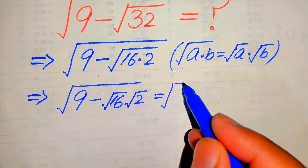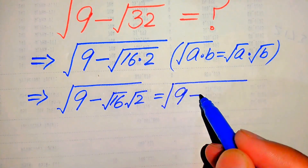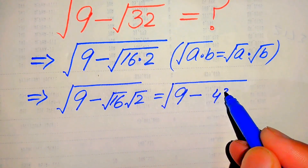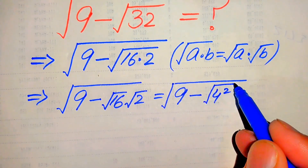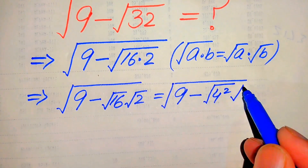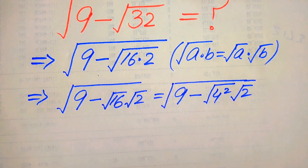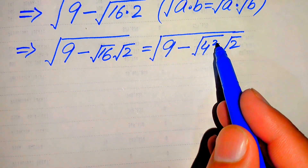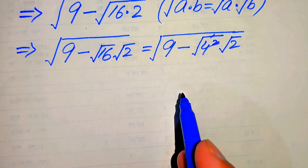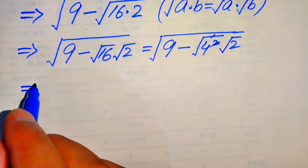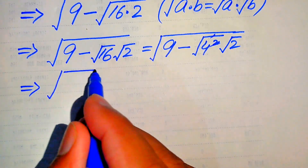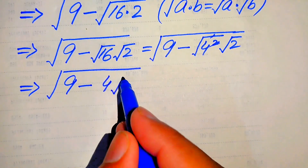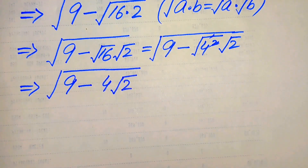It will be written as square root of 9 minus — we write square root of 16 as: we write 16 as 4 squared and take its whole square root — and here we have square root of 2. In the next step, the square and square root cancel, and we get square root of 9 minus 4 times square root of 2.